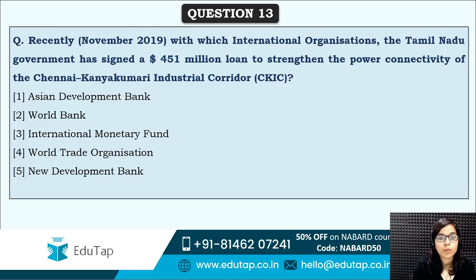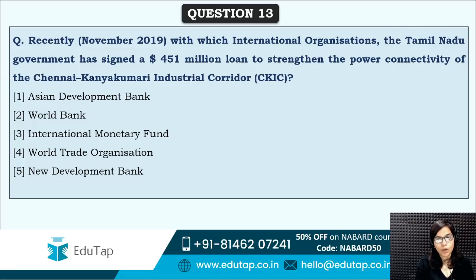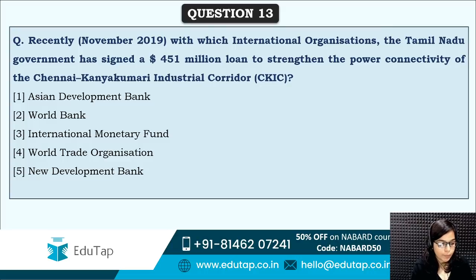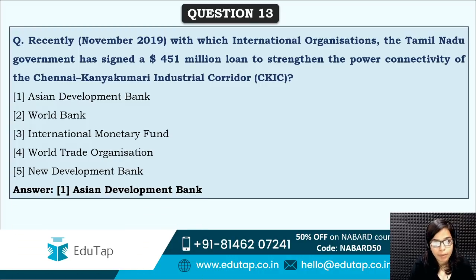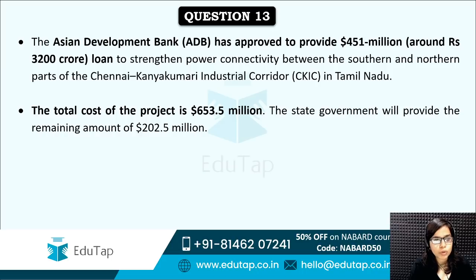Next: with which international organization has the Tamil Nadu government signed a $451 million loan to strengthen the power connectivity of the Chennai-Kanyakumari Industrial Corridor? The correct answer is option one — the Asian Development Bank. The total cost of the project is $653 million, out of which $451 million will be provided by the Asian Development Bank.